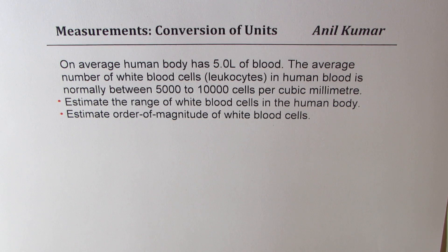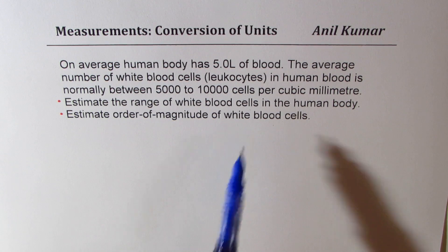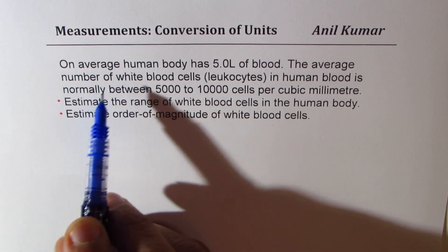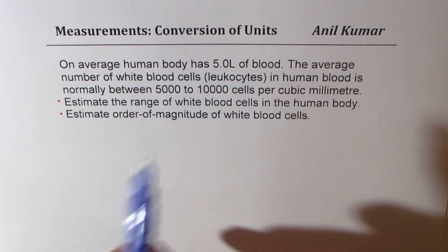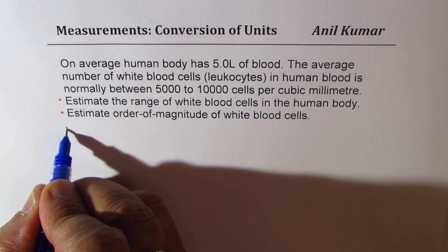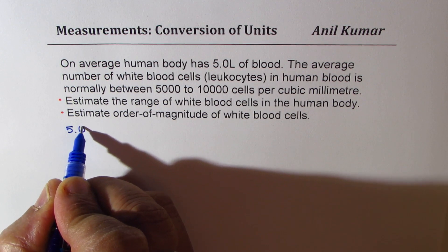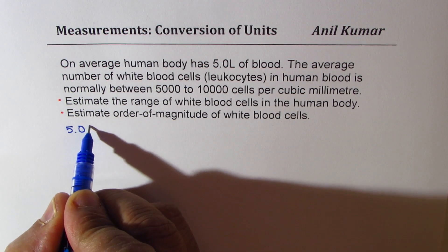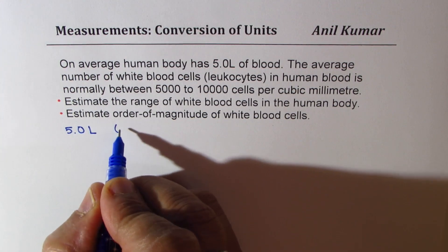Let's see how to solve such questions. We have different kinds of units here. The human body has 5.0 liters of blood — I have purposely put 5.0, giving us two significant figures. So that gives us two significant places.